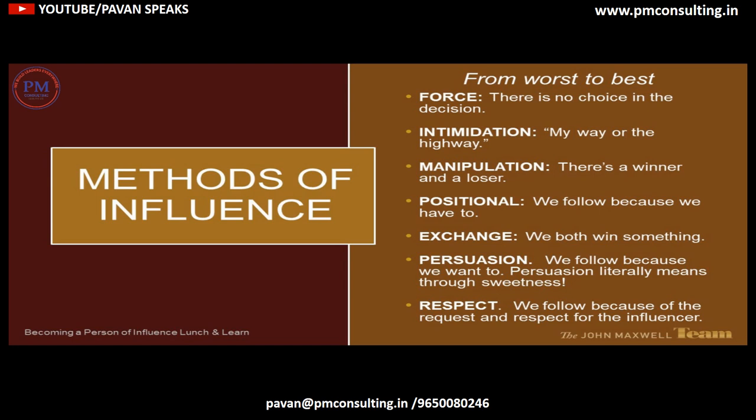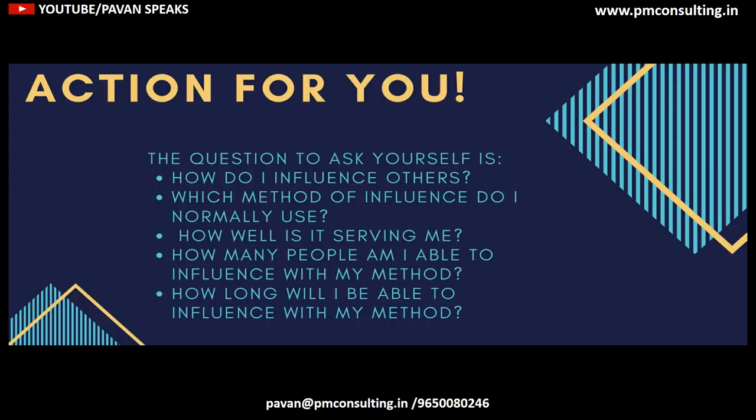The fifth is exchange — we both win something. The sixth is persuasion — we follow because we want to. Persuasion literally means 'through sweetness.' And the last is respect — we follow because of the request and respect for the influencer.